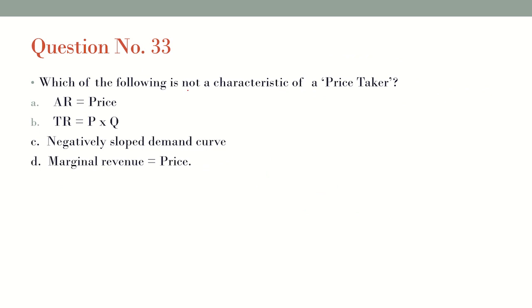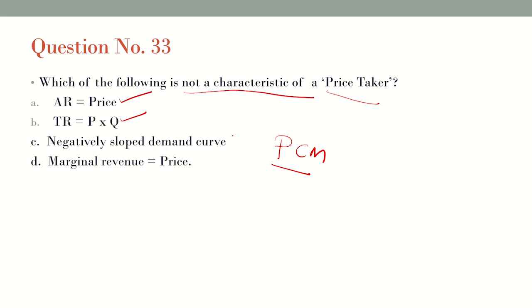Question number 33: Which of the following is not a characteristic of a price taker? In the perfect competition market, both buyers and sellers are price takers. Average revenue equals price, total revenue equals price into quantity, and marginal revenue equals price. A negatively sloped demand curve is not a characteristic — it is a horizontal demand curve. So the answer is option C.